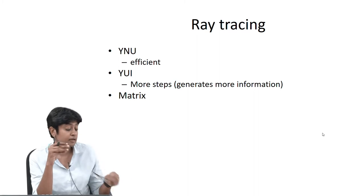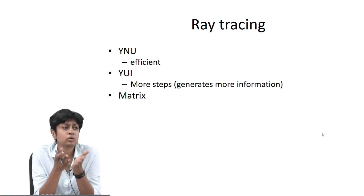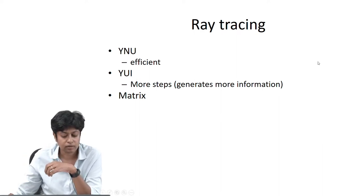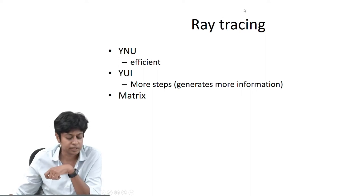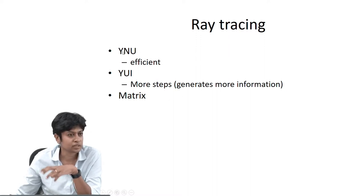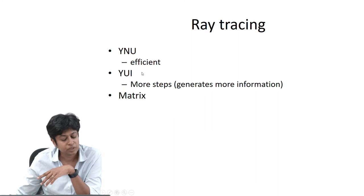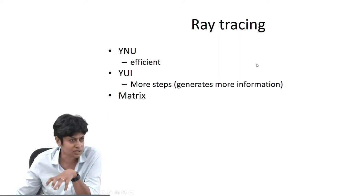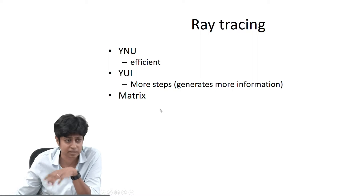When you look at ray tracing there are actually several ways you can trace rays through a system. There are three different ways that are used predominantly: they are called the YNU technique, the YUI technique, or the matrix method. The YNU is considered a very efficient method because the number of steps you take to trace any ray is less. The YUI uses one more equation, but gives you a little more information — in fact, that is what a program like OSLO does. We will also spend some time in this course looking at matrix techniques for tracing a ray.